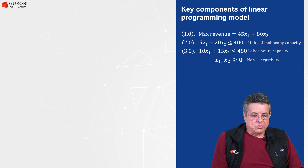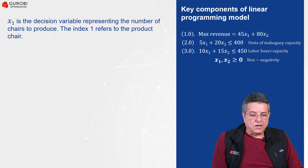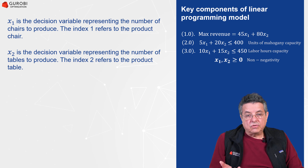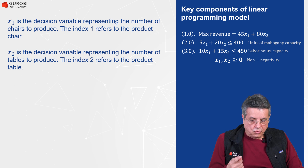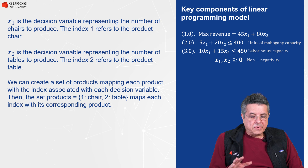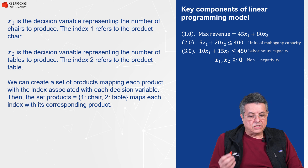As you remember, when we were defining the furniture problem, X1 is the decision variable representing the number of chairs to produce. We use the index 1 to refer to the product chairs. The other decision variable was X2, and we use the index 2 to refer to the product table. With this idea in mind, we can create a set of products mapping each product with the index associated with each decision variable.